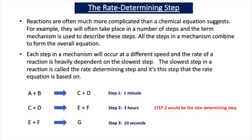We're now going to look at the meaning of the term the rate determining step. Reactions are often much more complicated than a chemical equation suggests — for example, they'll often take place in a number of steps, and the term mechanism is used to describe these steps. All the steps in a mechanism combine to form the overall equation. For example, methane reacting with chlorine to form chloromethane and hydrogen chloride gas contains initiation, propagation, and termination steps — quite a complicated mechanism, but the chemical equation suggests a very simple reaction.